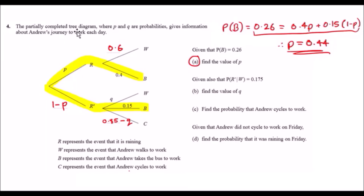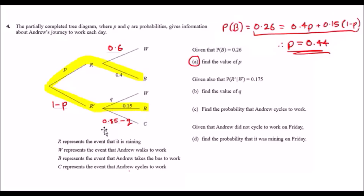Question 4: a partially complete tree diagram gives information about Andrew's journey to work. The tree has probability p on one branch, making the other 1 − p. One branch shows 0.4, making the complementary branch 0.6. The three branches from another node include q and 0.15, so the remaining branch is 0.85 − q.